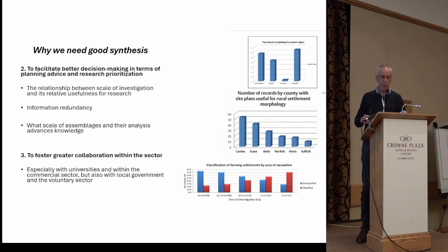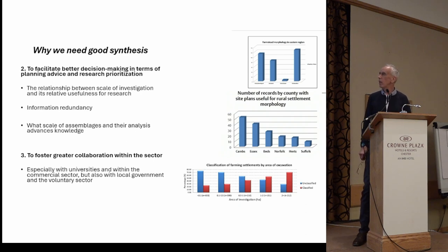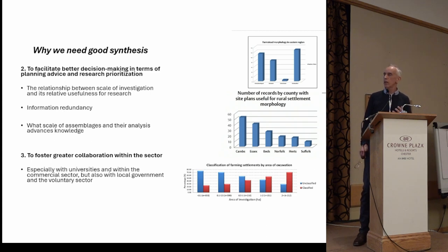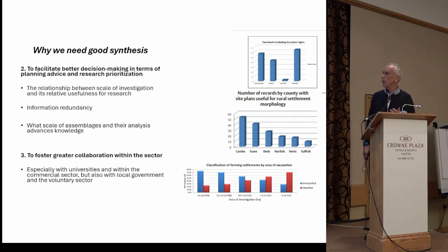The second point is information redundancy. Looking again at Roman settlement, there are repeated patterns in the landscape where over time you can predict the type of evidence and the type of results from analysis. You may need to look at different ways of prioritizing how you excavate and analyze. Similarly, for assemblages — particularly animal bone — the scale of the assemblage influences how useful it is for analysis. So again, size matters.